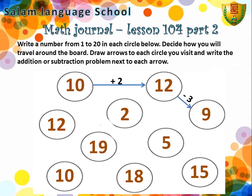12 goes to 9. This means the number is getting smaller. We subtract 3. Then 9 goes to 2. This means the number is getting smaller; we subtract 7. When 2 goes to 12, this means the number is getting larger. 2 plus 10 equals 12.